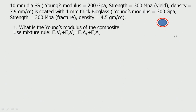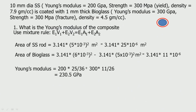The question is: what is the Young's modulus of this composite? We use the mixture rule: E_composite = E1·V1 + E2·V2, or equivalently E1·A1 + E2·A2 where V is volume fraction. Since we don't know the rod length, we use area fractions. Area of the stainless steel rod: π·r² = π·(5×10⁻³)² = π × 25 × 10⁻⁶ m². For the bioglass coating (1 mm thick, so outer radius = 6 mm): area = π·(6×10⁻³)² − π·(5×10⁻³)² = π × (36−25) × 10⁻⁶ = π × 11 × 10⁻⁶ m².